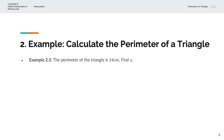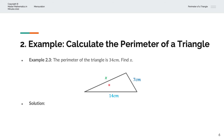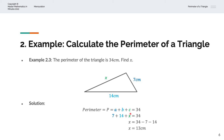In the third example, we're given the perimeter of the triangle is 34 centimetres and we're asked to find X. Visually, we have a triangle of sides 7 centimetres, 14 centimetres, and we're asked to find the length of the third side, X. And so perimeter P equals A plus B plus C, which equals 34. With A equal to 7, B equal to 14, and C equal to X, we have 7 plus 14 plus X equals 34.